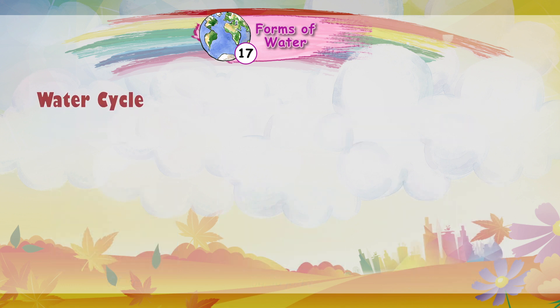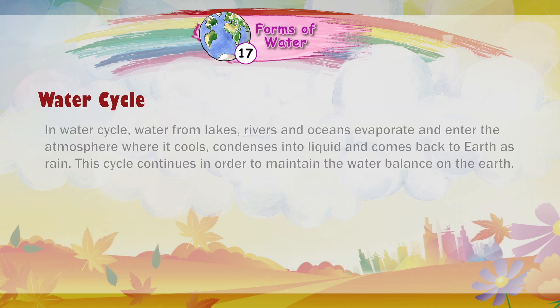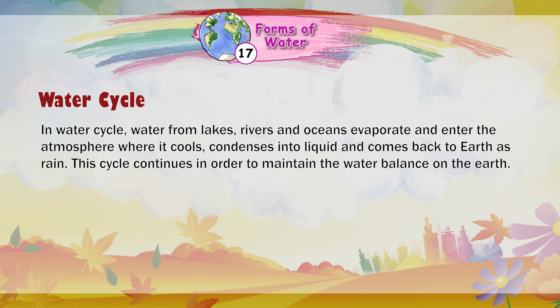Water Cycle. In the water cycle, water from lakes, rivers, and oceans evaporates and enters the atmosphere, where it cools and condenses into liquid, and comes back to Earth as rain. This cycle continues in order to maintain the water balance on the Earth.